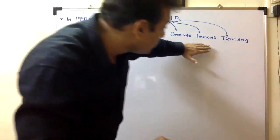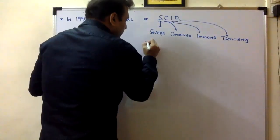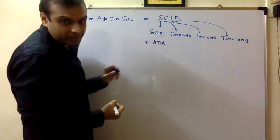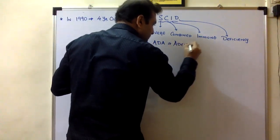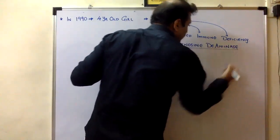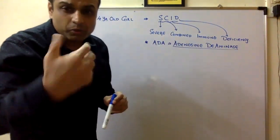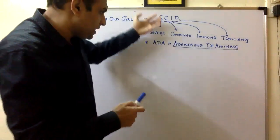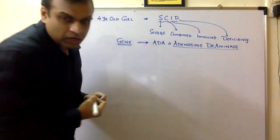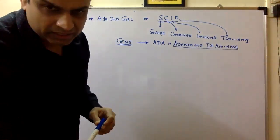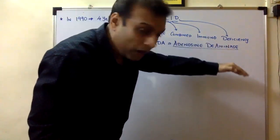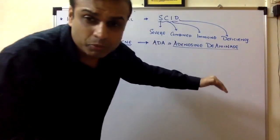The question is: why is there no immunity? Our lymphocytes need to produce an enzyme called ADA — Adenosine Deaminase — which is very important for building immunity. In this child, the gene responsible for making this enzyme was non-functional. If the gene is non-functional, the enzyme is not made; if the enzyme is not made, lymphocytes cannot function properly; and if lymphocytes don't function, immunity becomes weak.